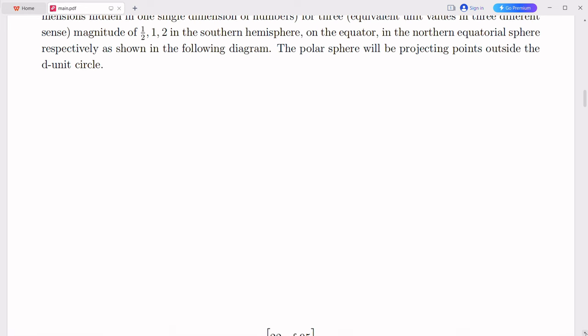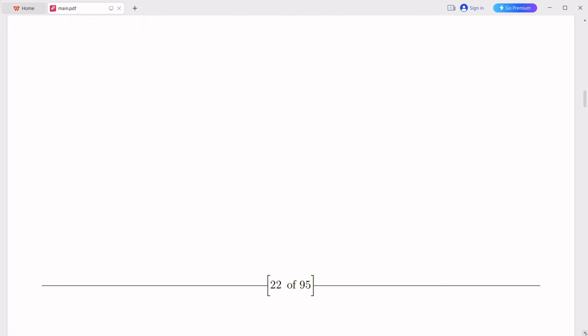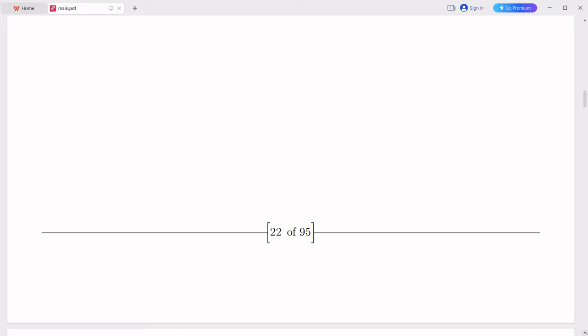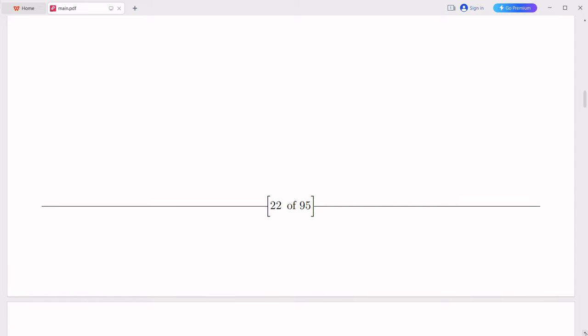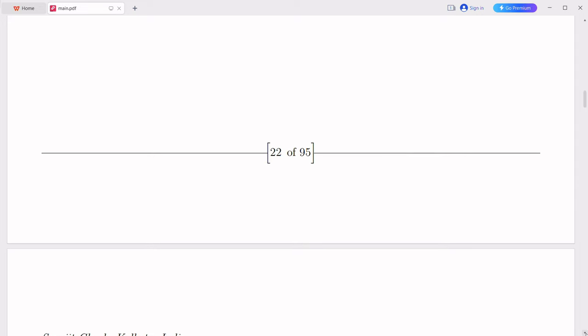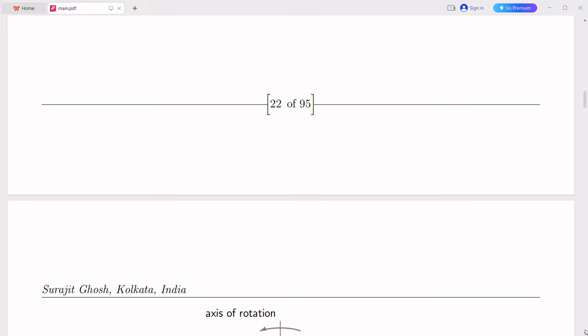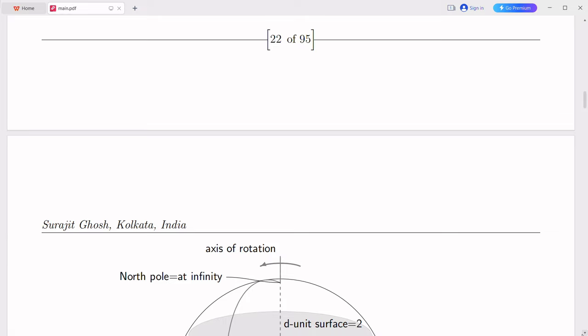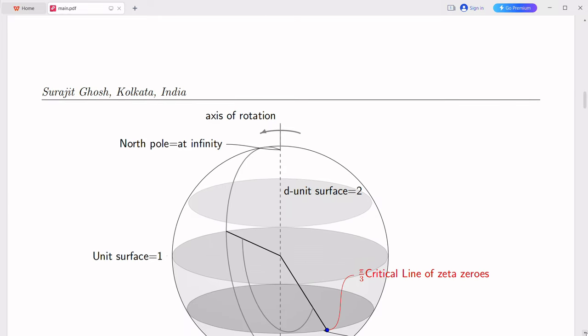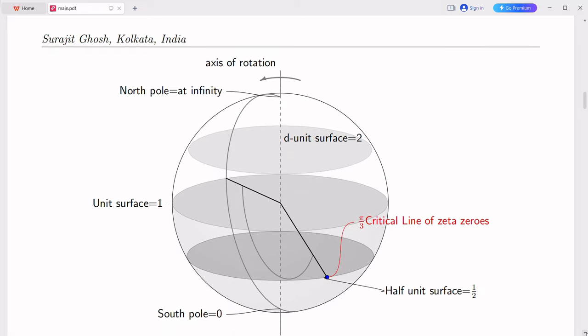In conclusion, my journey has taken me from the realm of negative factorials to the depths of the Riemann hypothesis, from the pi/3 angles to the mysteries of dark energy, and from the fine structure constant to the Charles's ratio. Along the way, I have encountered fascinating connections and tantalizing hints of a profound underlying order in the universe. Although many questions remain unanswered, I am filled with a sense of awe and excitement for what lies ahead in the ever-evolving quest for knowledge and understanding.